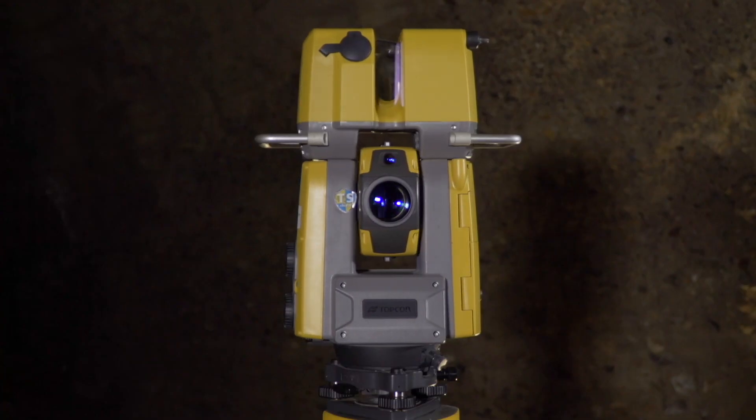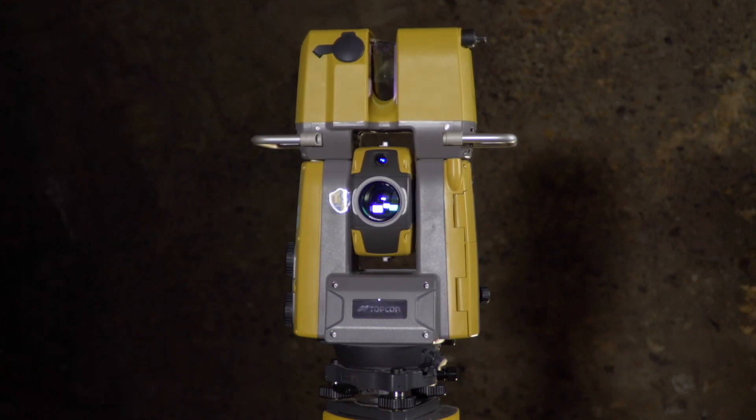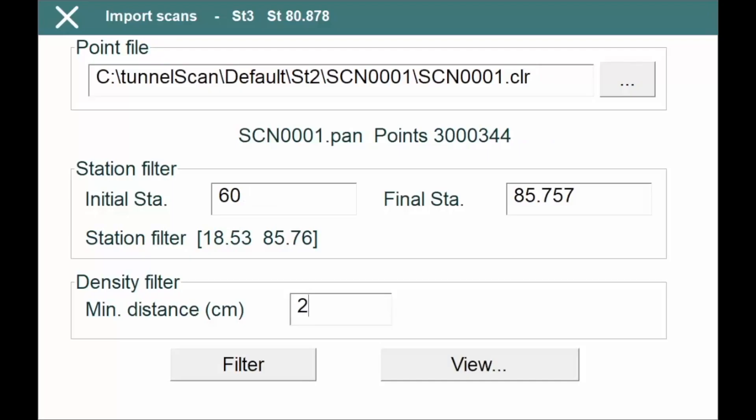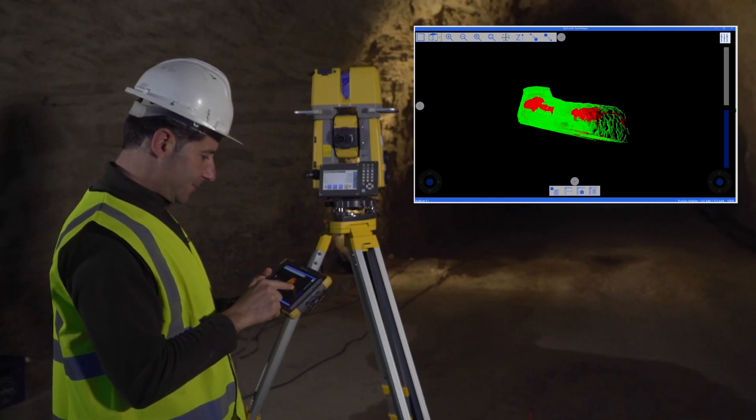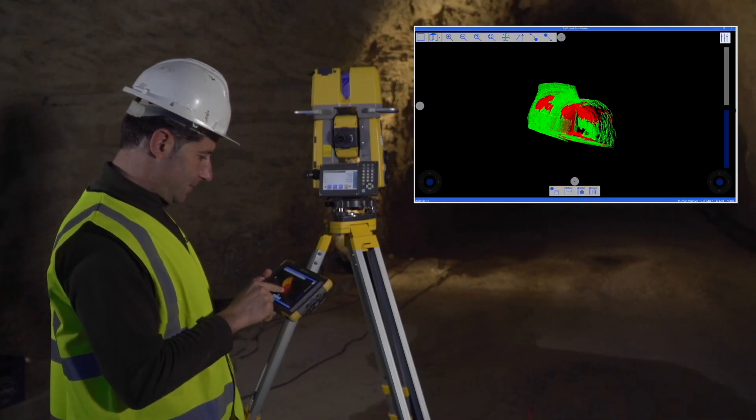TCP Tunnel Scan controls the scanning of the tunnel vault or face with optional filters by station range and distance. A powerful 3D viewer allows you to review the point cloud and check measures.